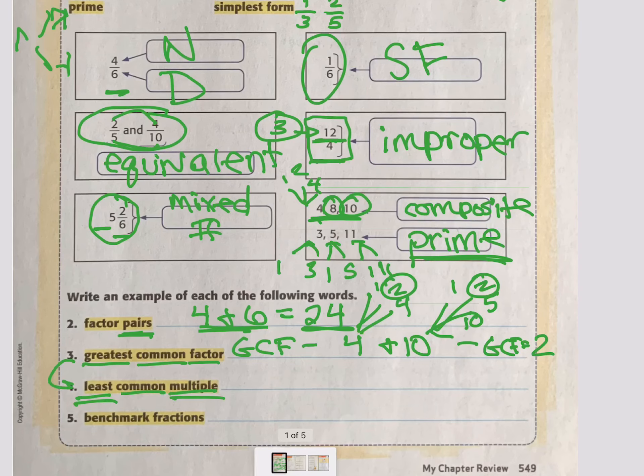Now we have least common multiple. That is the exact opposite pretty much. Because least is the opposite of greatest. And multiple is the opposite of factors. So this is when you skip count by two numbers, what is the smallest number that they have in common? So let's go with 5 and 6. So if I skip count by 5, I go 5, 10, 15, 20, 25, 30.